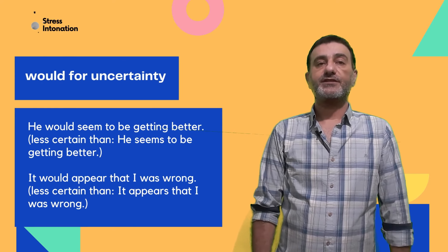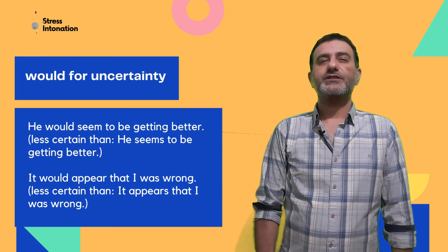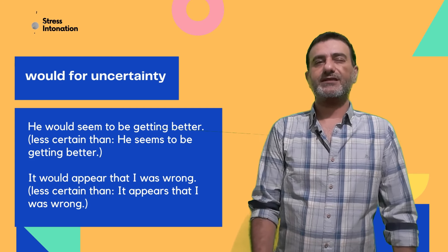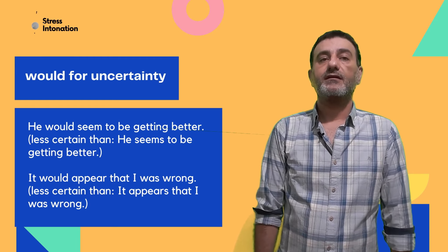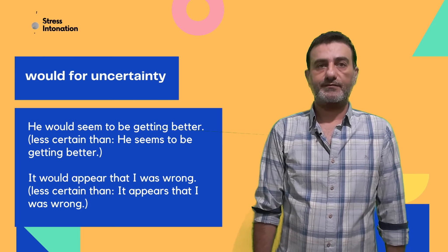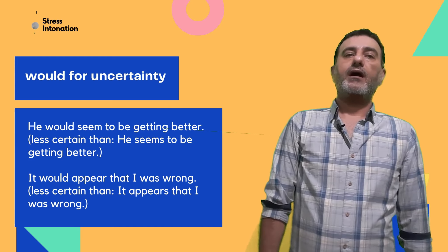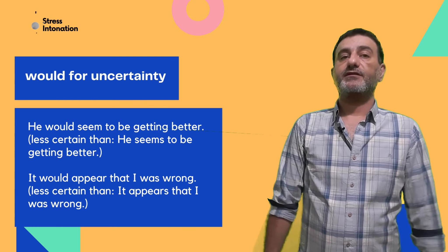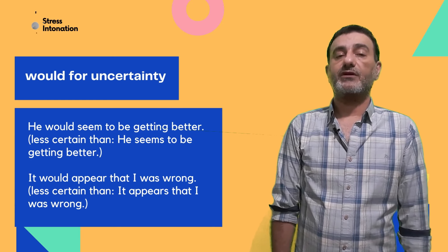'Would' for uncertainty. For example: 'He would seem to be getting better' — less certain than 'He seems to be getting better.' 'It would appear that I was wrong' — less certain than 'It appears that I was wrong.'